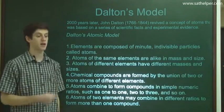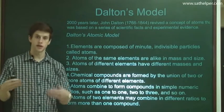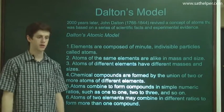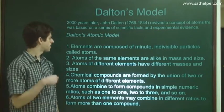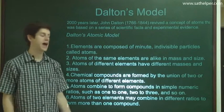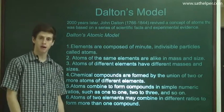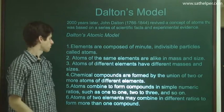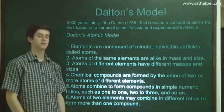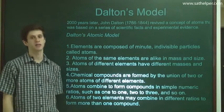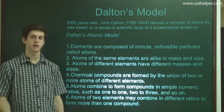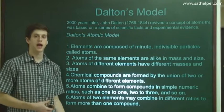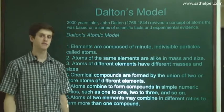Dalton's atomic model states that elements, which are pure substances, are composed of minute, indivisible particles called atoms. Atoms of the same element are alike in mass and size — so a carbon atom is going to have the same mass and size as any other carbon atom. Atoms of different elements are going to have different masses and sizes — so whereas carbon atoms are similar to each other, an oxygen atom will have an inherently different mass and size.